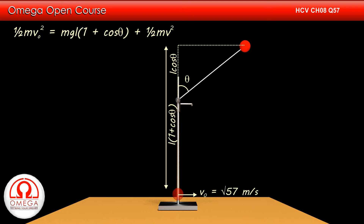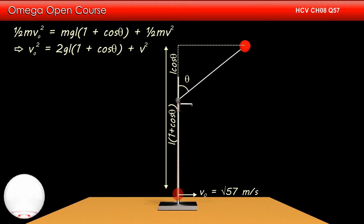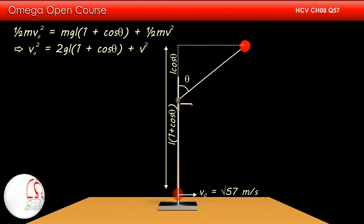Therefore, ½MV₀² must be equal to MgL(1 + cos theta) plus ½MV². Dividing both sides by ½M, we get V₀² = 2gL(1 + cos theta) + V². ... (Equation 1)